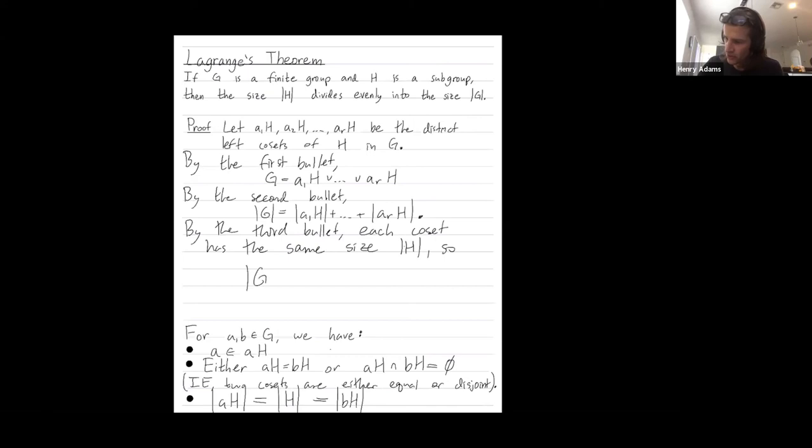So we get that the size of the group is equal to the number of cosets times the size of any single coset. How many terms do I have here? I have R. I have R terms all of size H. So in total, the total of the sum is equal to R times the size of H.